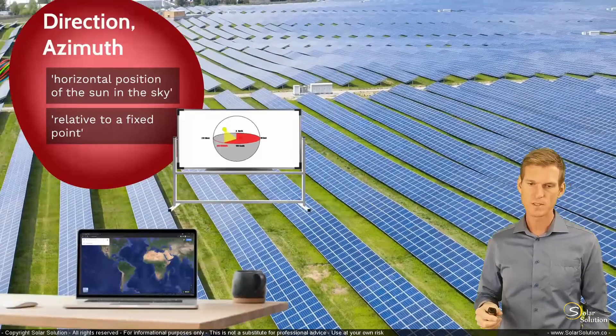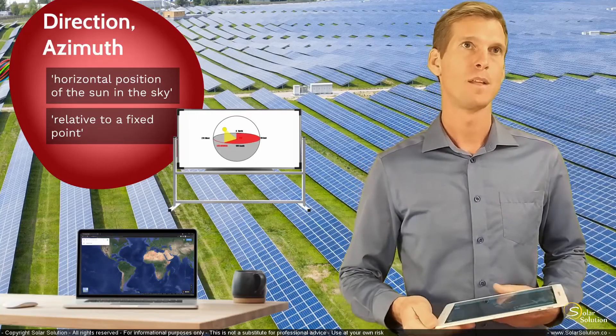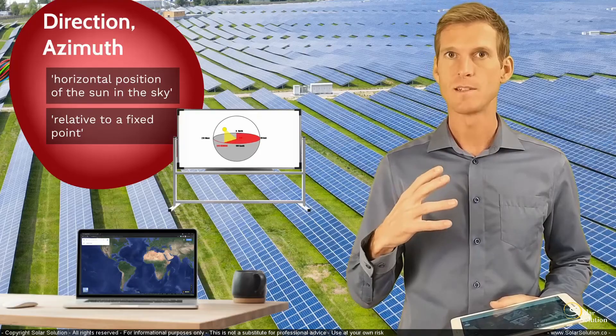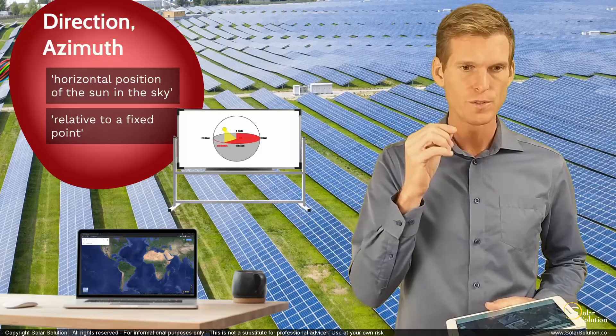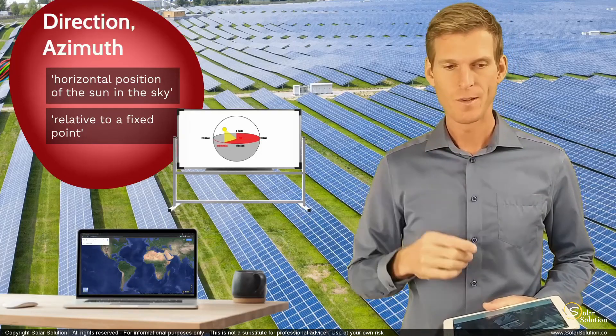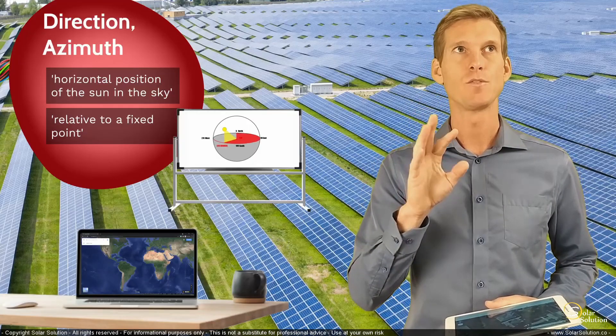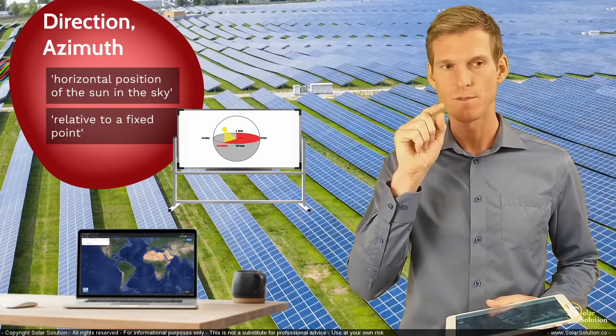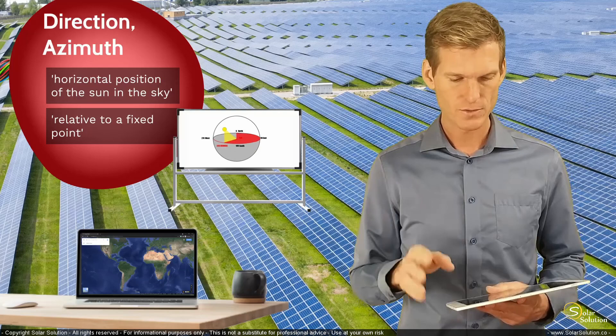The reason why I'm explaining this is that it's really important if you are in the process of carrying out a financial or performance analysis of your future or existing solar energy system, that you know what your orientation of your solar modules are towards the sun. So let's go online and I'll show you how you can figure out what the actual azimuth of your solar modules are or will be.